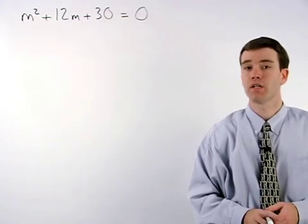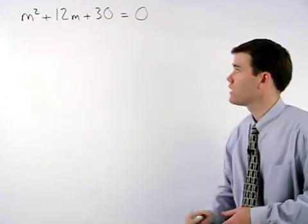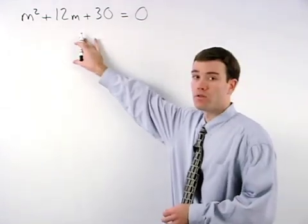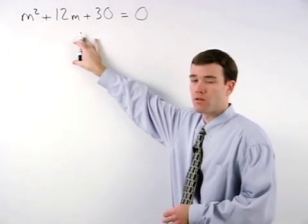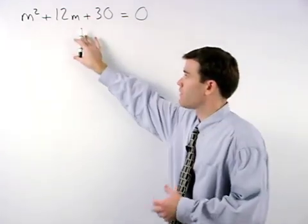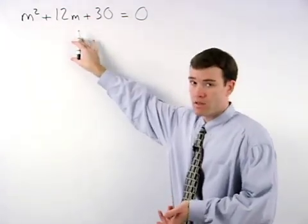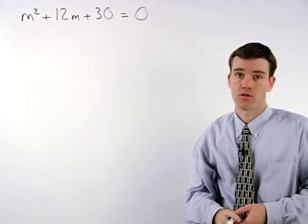To solve this equation by completing the square, we need a perfect square trinomial on the left side of the equation. Notice that the trinomial we have doesn't even factor, so we know it's not a perfect square trinomial.